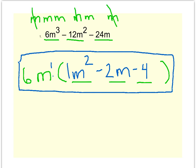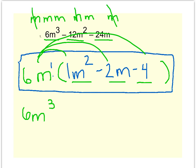Let's check it using the distributive property. Six m times one m squared is six m cubed. Six m times negative two m is negative twelve m squared. Six m times negative four is negative twenty-four m. That gets me back to where I started, so I know everything was factored correctly.